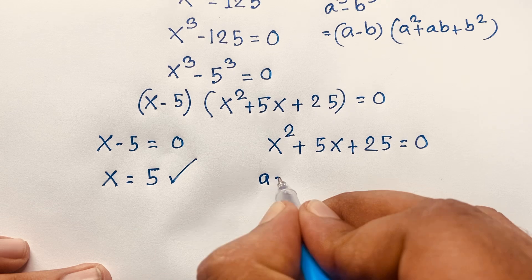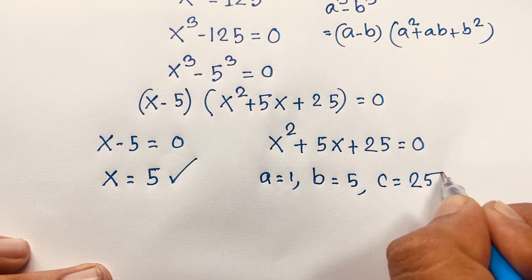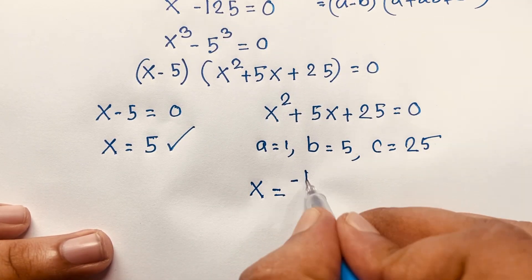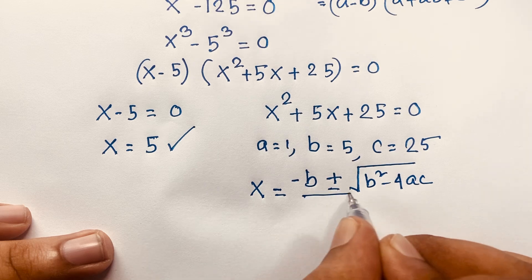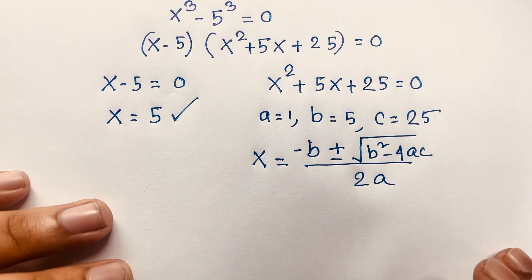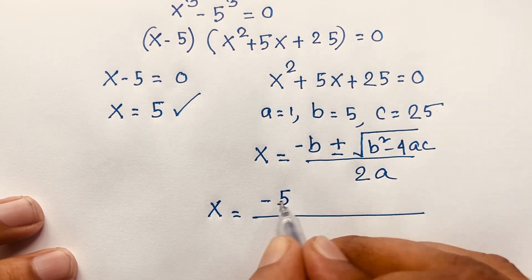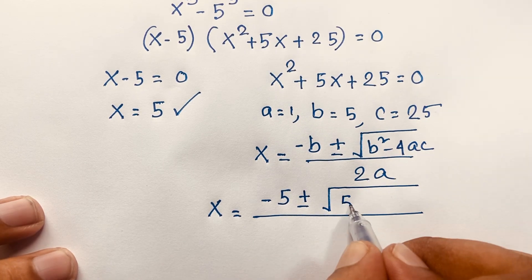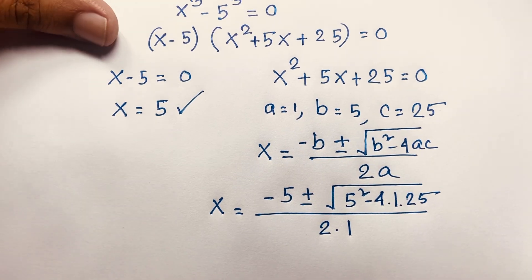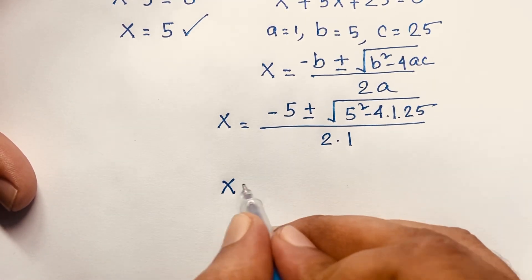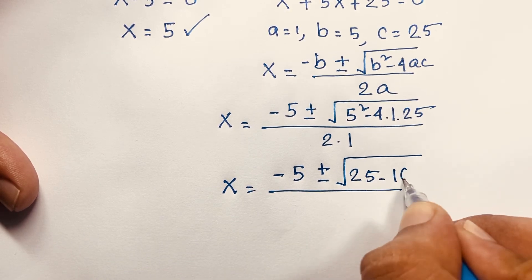For the second case, we use the quadratic formula. Here a equals 1, b equals 5, and c equals 25. The formula is x equals negative b plus or minus square root of b squared minus 4ac, all over 2a. Substituting: x equals negative 5 plus or minus square root of 5 squared minus 4 times 1 times 25, over 2 times 1.